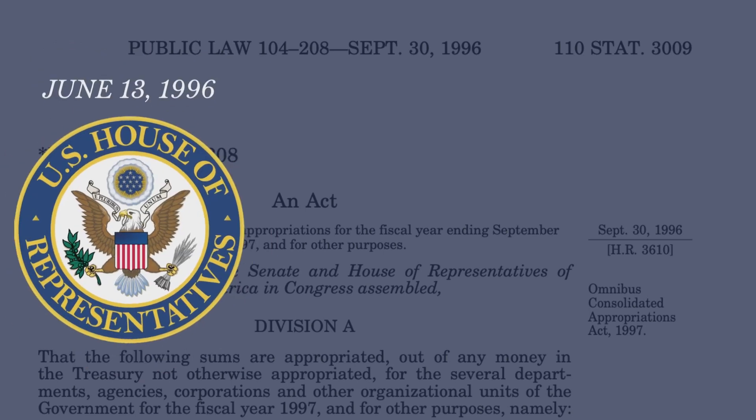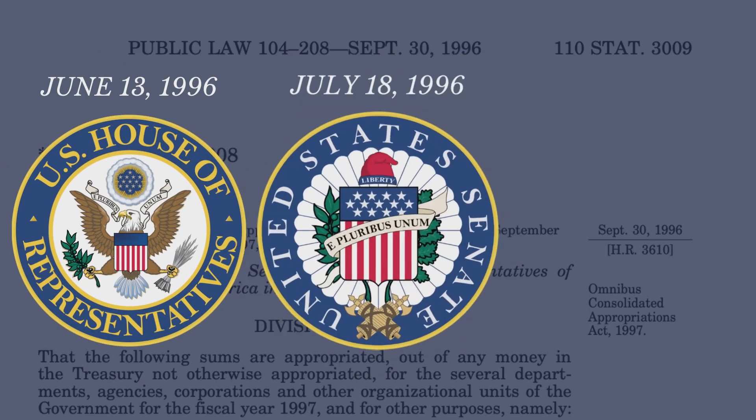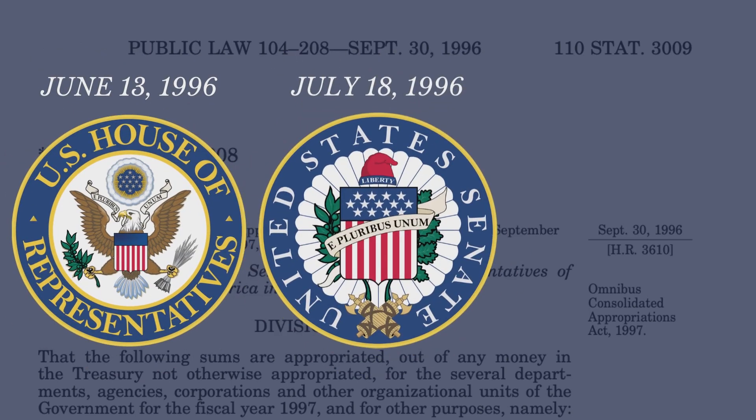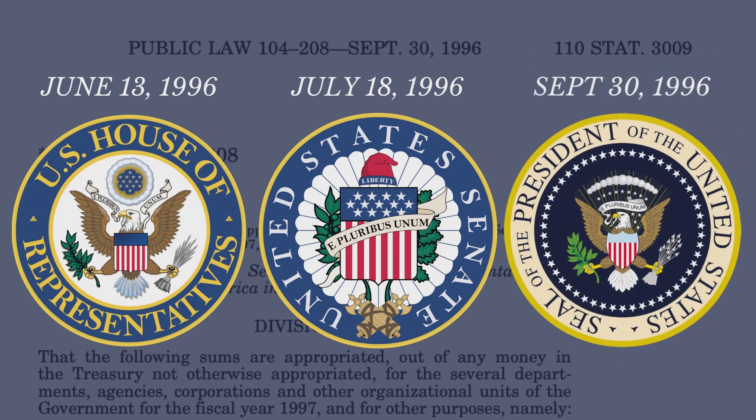The House passed the bill on June 13, and the Senate passed it on July 18. President Bill Clinton signed IIRAIRA for its final approval on September 30, 1996. Its purpose was to decrease the number of undocumented immigrants in the United States. Instead, it had an inverse effect by complicating the green card and citizenship process, ultimately incentivizing immigrants to avoid the legal process altogether.